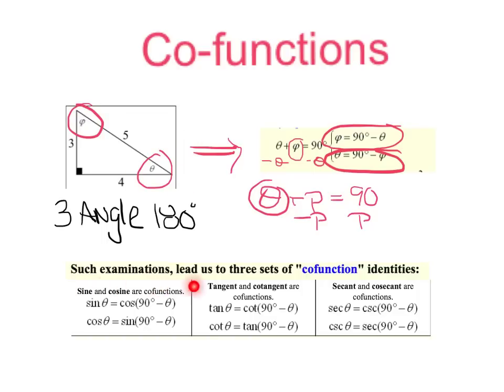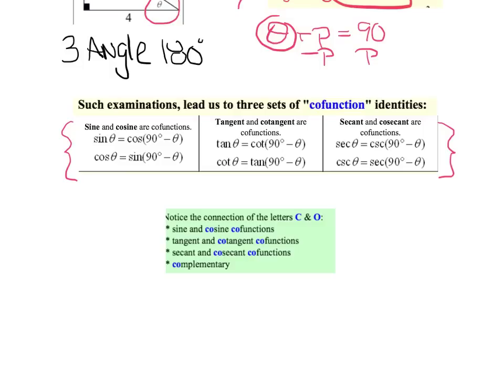Such examinations lead us to three sets of co-functions. And let's pause for a moment and copy these into your notebook here. Now, here's the trick. It's in a nice green box on your screen. It says, notice the connection of the letters C and O.